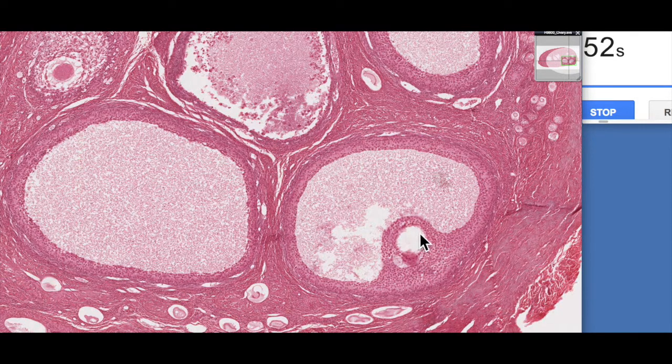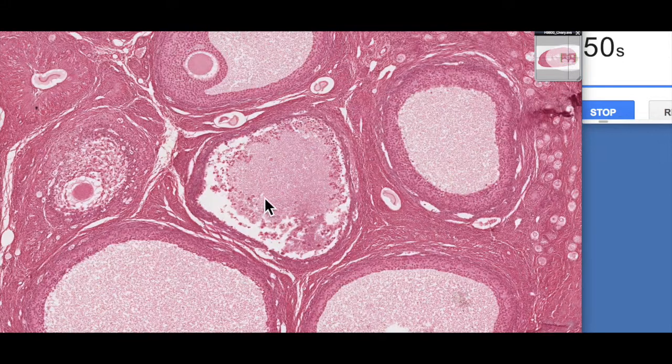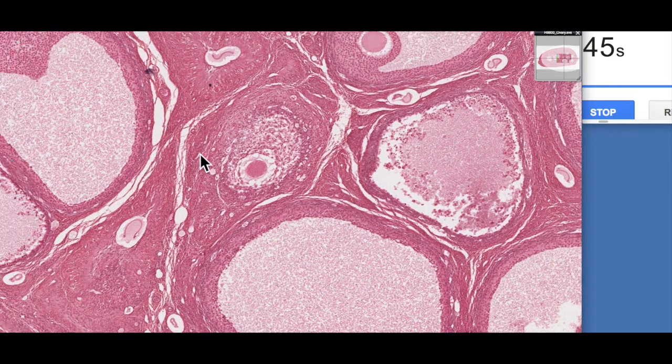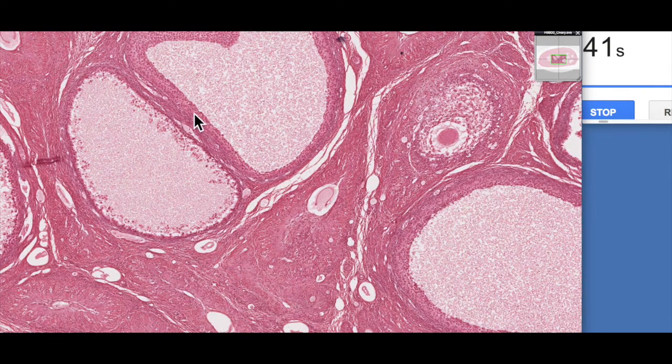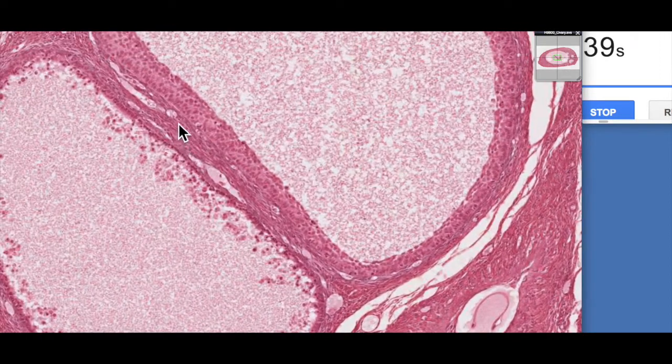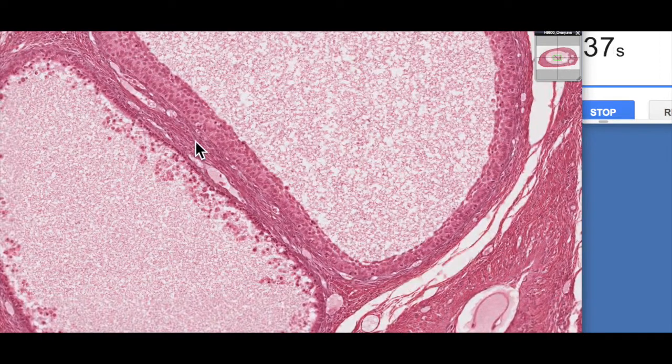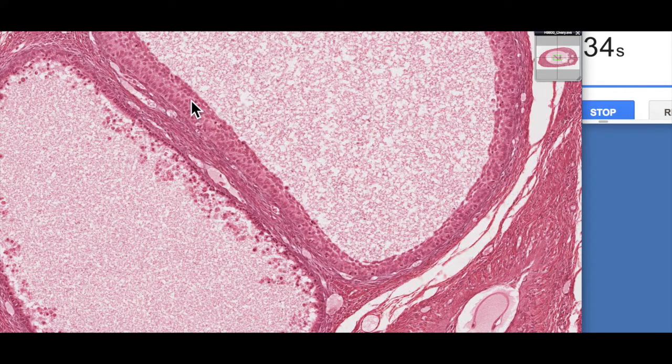Here this oocyte's been removed through processing, and here we've actually got an atretic follicle. So how do you tell the difference between an atretic follicle and a healthy follicle? Well it actually so happens we have two antral follicles here side by side.